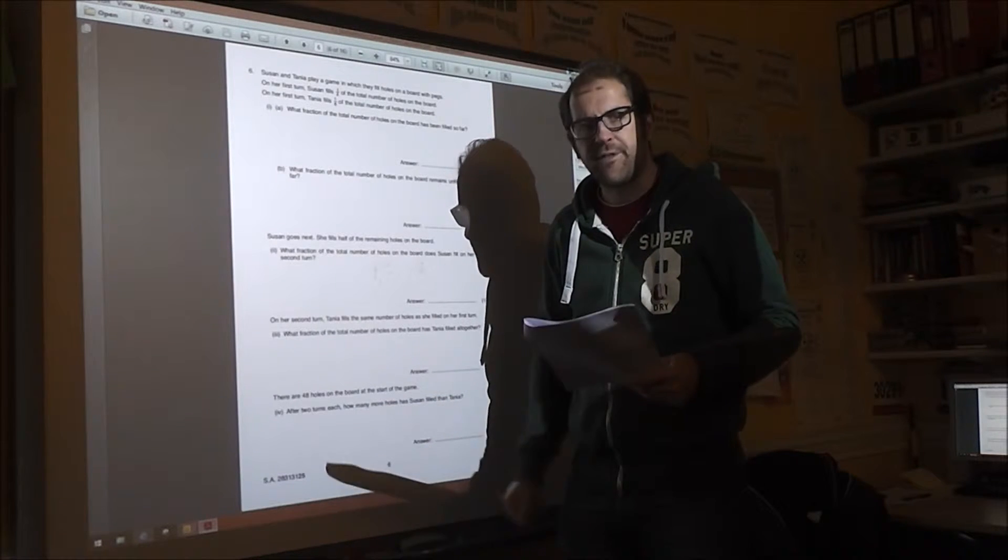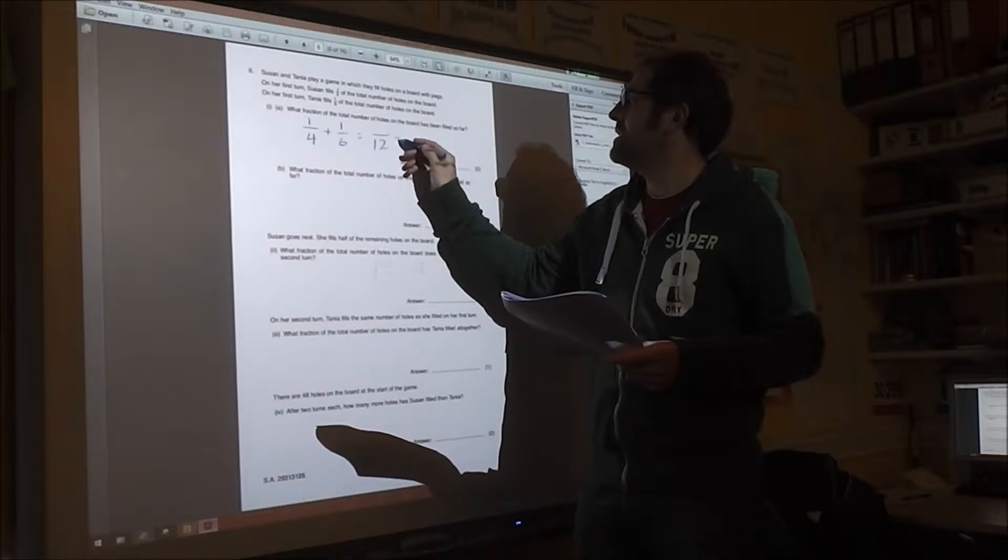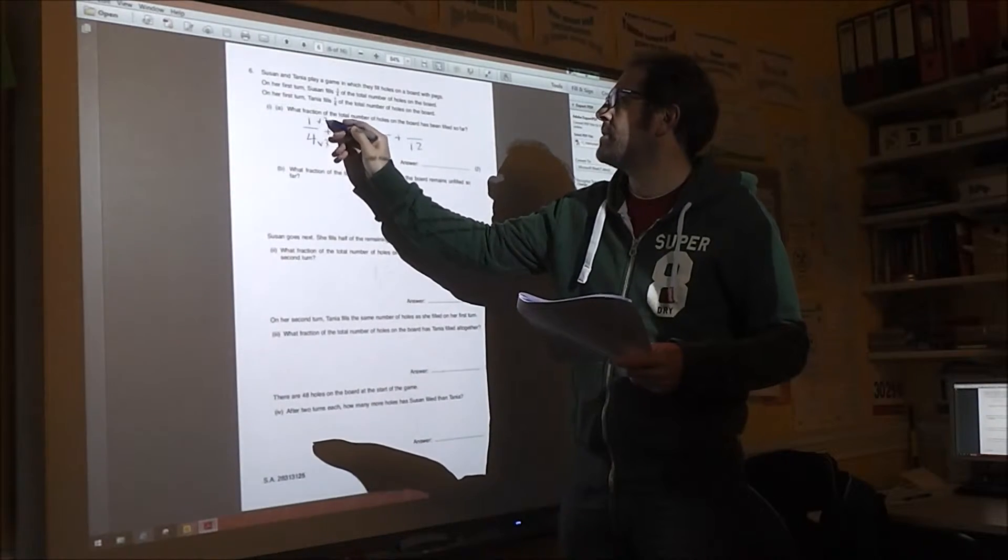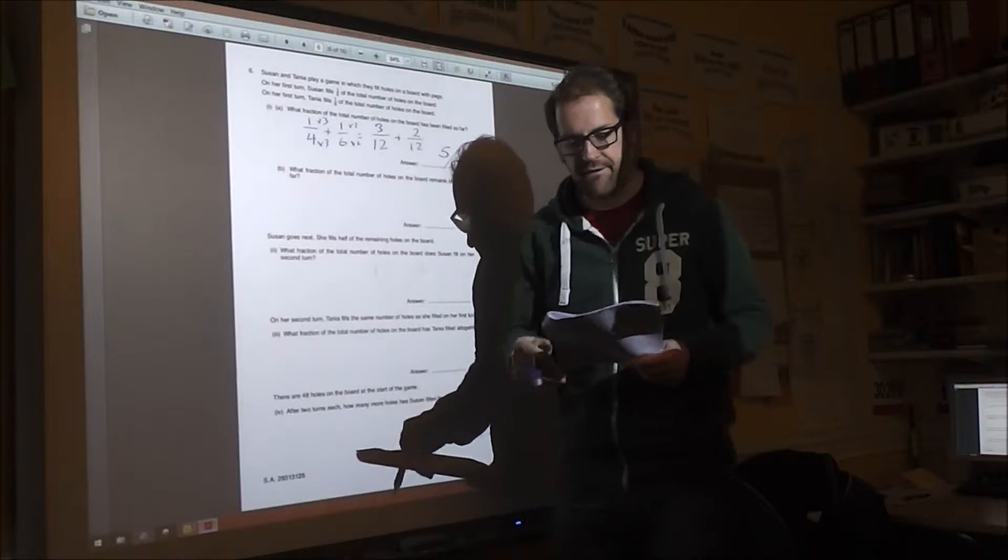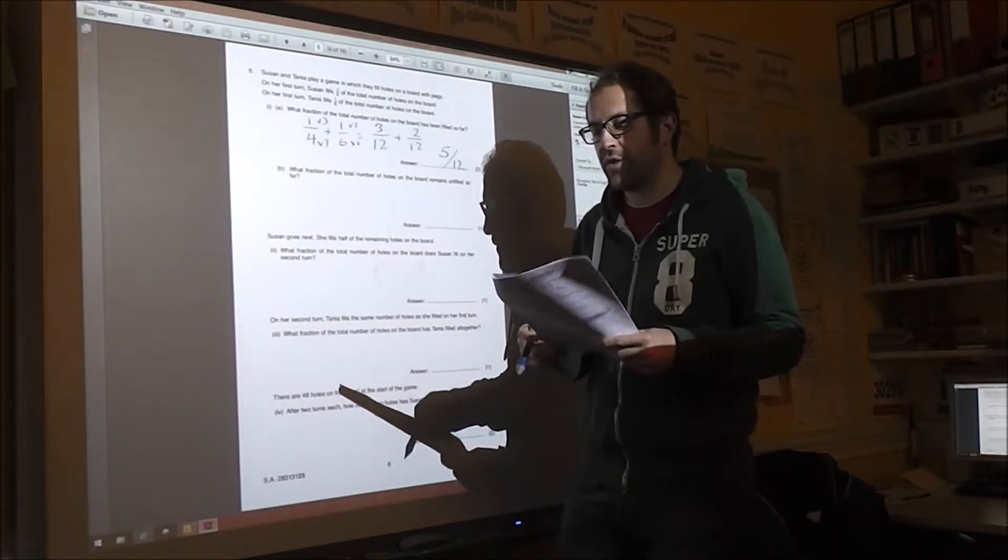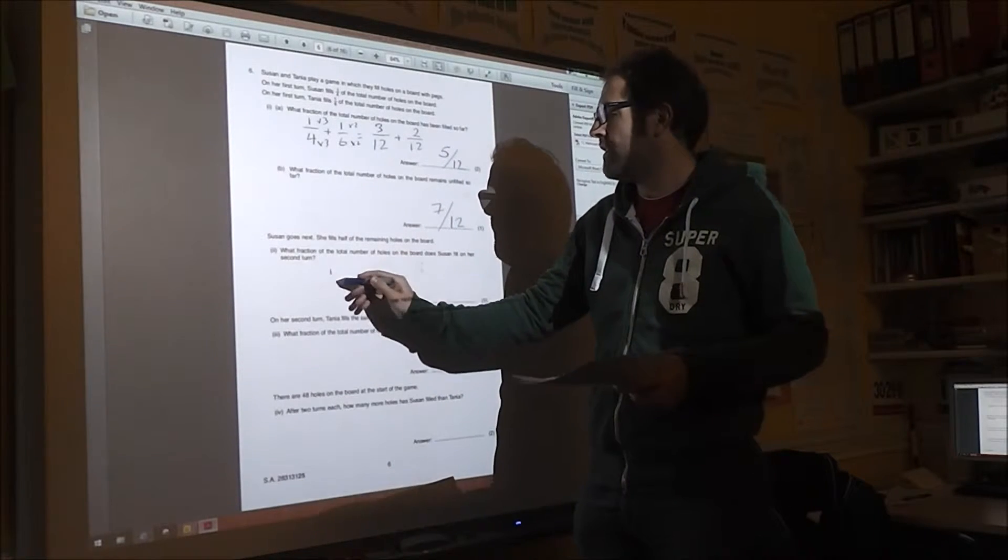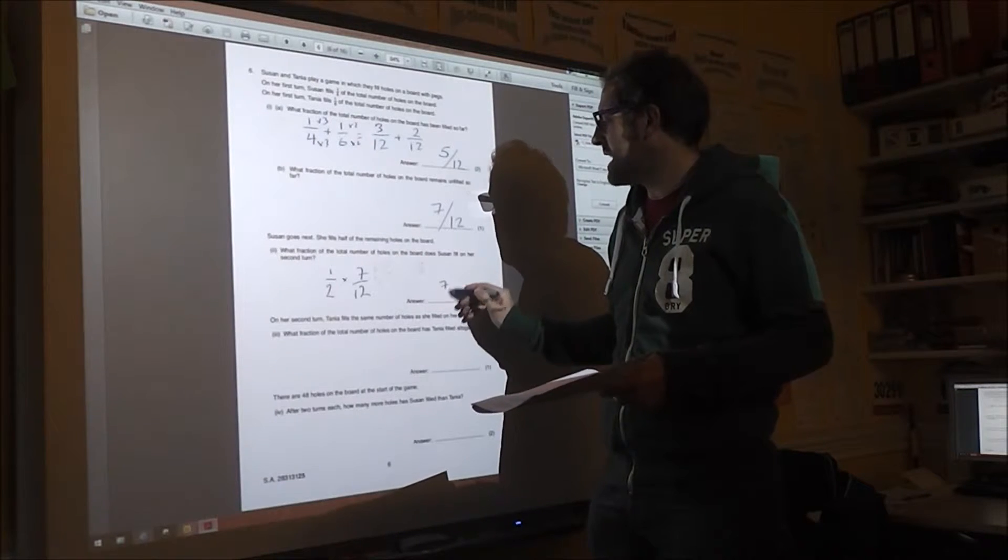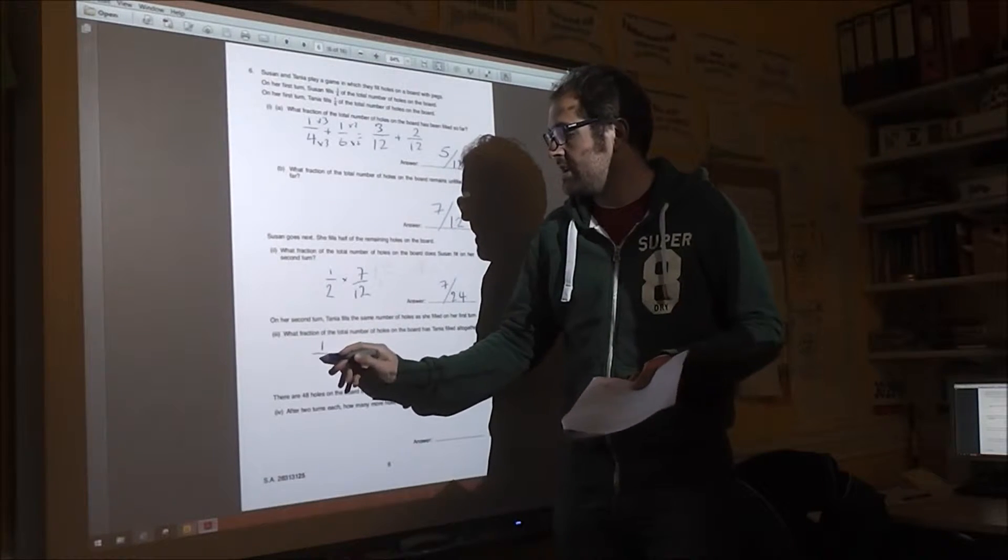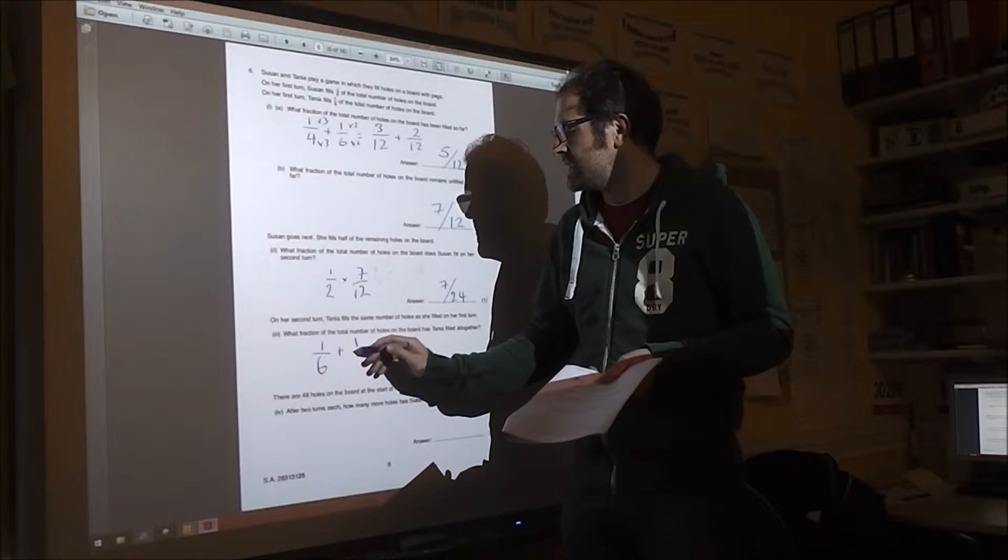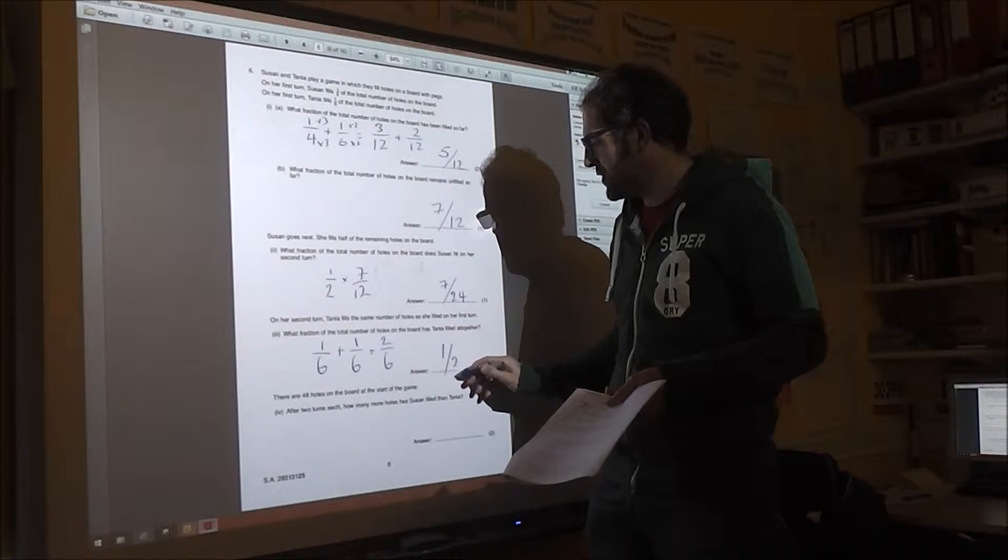Okay, number 6 is all about fraction operations. We've got a quarter plus a sixth. The lowest common denominator is 12. So that's times 3, times 3, 3/12ths. Times 2, times 2, 2/12ths. Which means there's 5/12ths left. Make sure you simplify if you don't use 12 as your common denominator. That means there are 7/12ths left. And if you do half of 7/12ths, it would be 7/24ths by multiplying top and multiplying bottom.